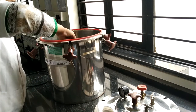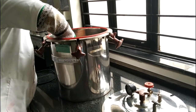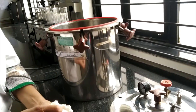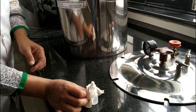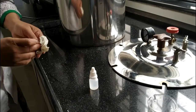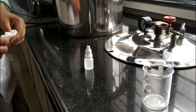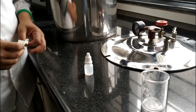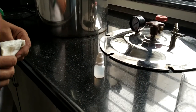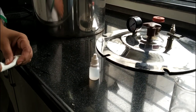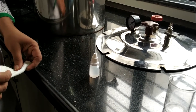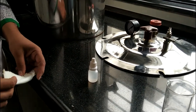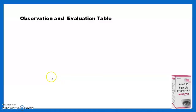Remove the eye drop's final container from the autoclave using cotton or cloth. In this way, our sterile atropine sulfate eye drop is prepared. Now for the evaluation and labeling, we move toward the next session. After going through the stepwise procedure in the laboratory, we move toward the observation and evaluation table.